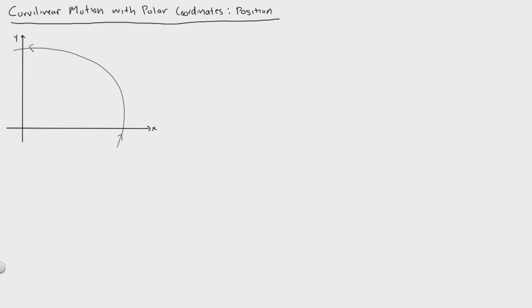Welcome back everybody. We're going to talk about curvilinear motion with polar coordinates. This is a new way to map out a particle's position relative to an angle and its position vector. What we're doing is mapping out rotation as well as translational motion of a particle.